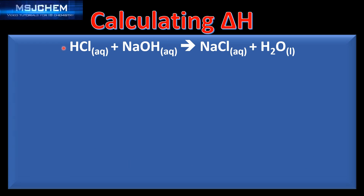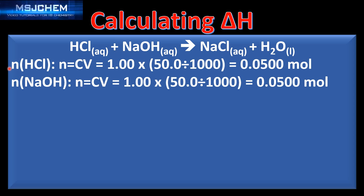We'll start with a balanced equation: hydrochloric acid reacts with sodium hydroxide to form sodium chloride and water. Next we calculate the number of moles using N equals CB — number of moles equals concentration times volume in dm³. This gives us 0.0500 moles of hydrochloric acid and 0.0500 moles of sodium hydroxide.